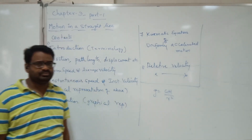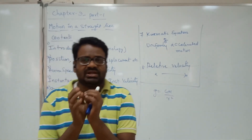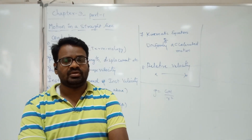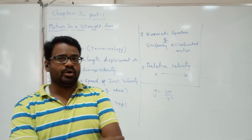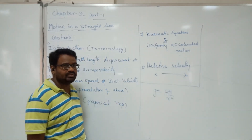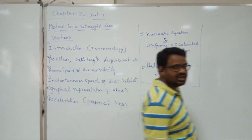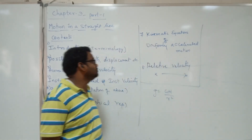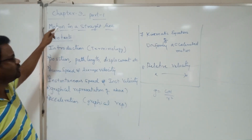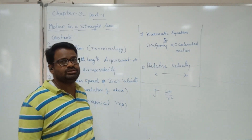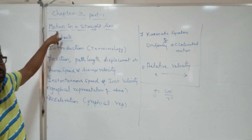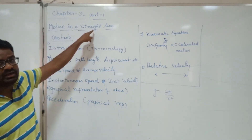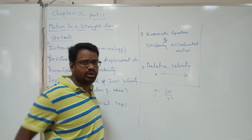In physics, there should always be a standard reference. At one point of time I am somewhere, and after five seconds I am at another location — that is a change of position. So in physics, motion deals with the change in position of a body with respect to time. In this chapter, we talk about motion along a straight line path.